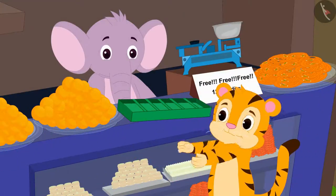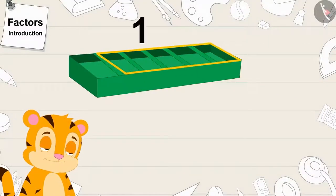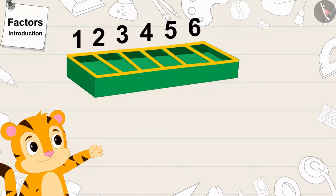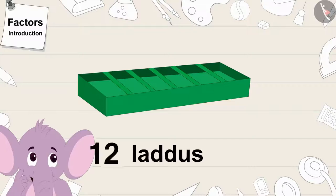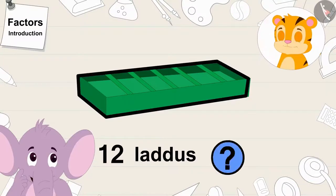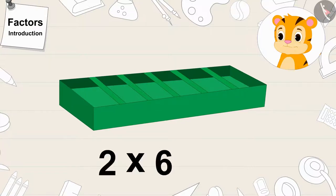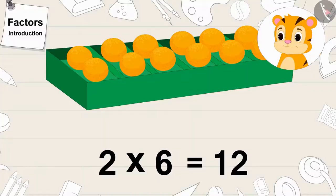Now, Shere Khan gave his box to Appu. There is one vertical line in Shere Khan's box and 6 slots. Children, will Appu be able to keep 12 laddus in Shere Khan's box? Yes, 2 times 6 is 12. Laddus can be kept in Shere Khan's box.